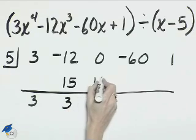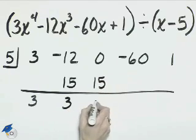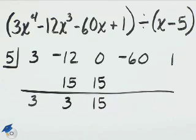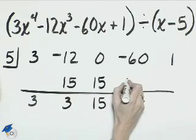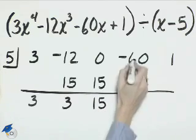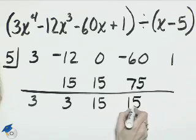5 times 3, 15 here. 0 plus 15 is 15. 5 times 15 is 75. Combining these two gives us 15.